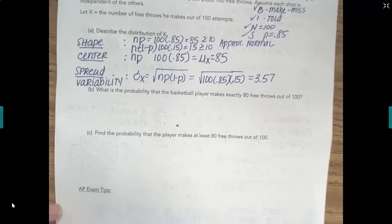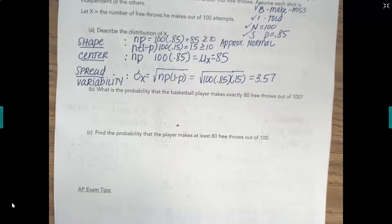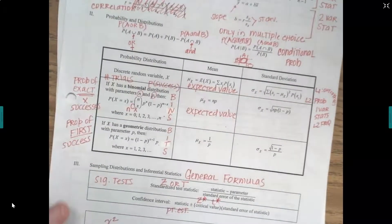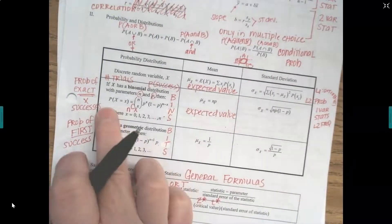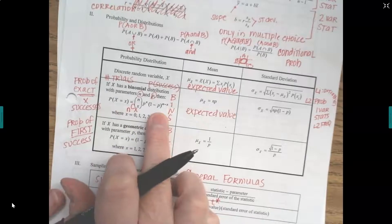The question goes on to ask for us to find the probability if the player makes exactly 80 free throws. This is binomial, so we've got to use the binomial formula. So taking a look at our annotated formula sheet, here's our binomial formula right here.